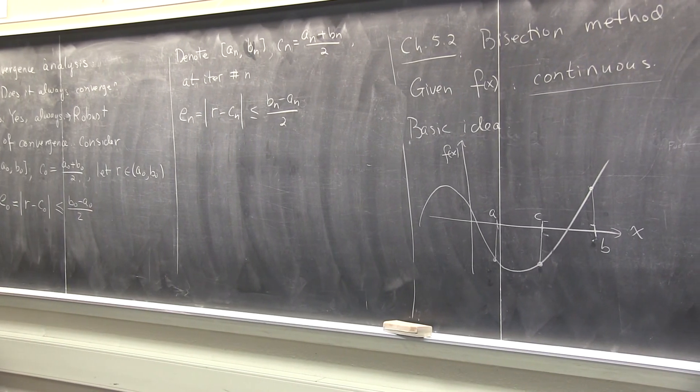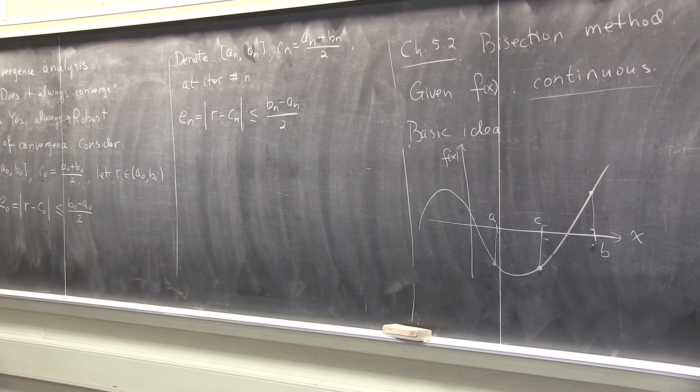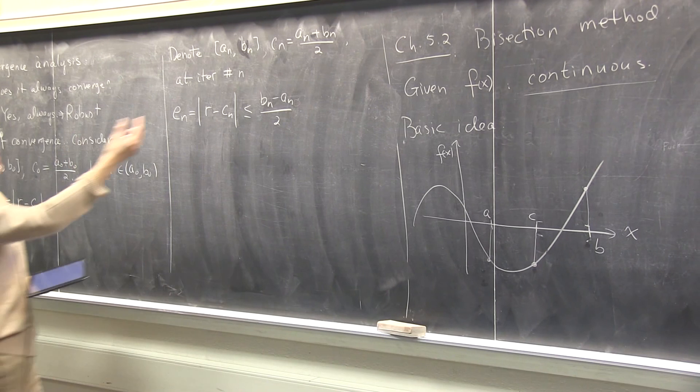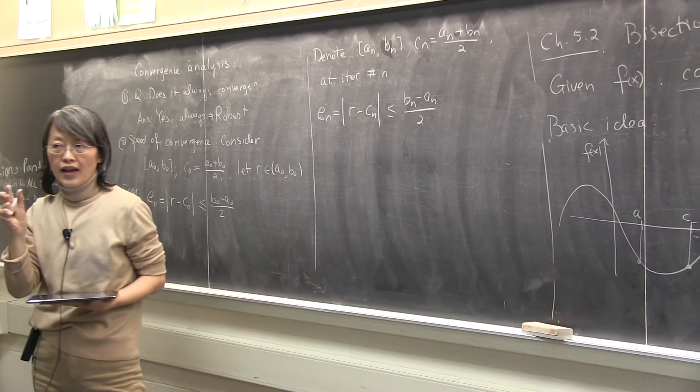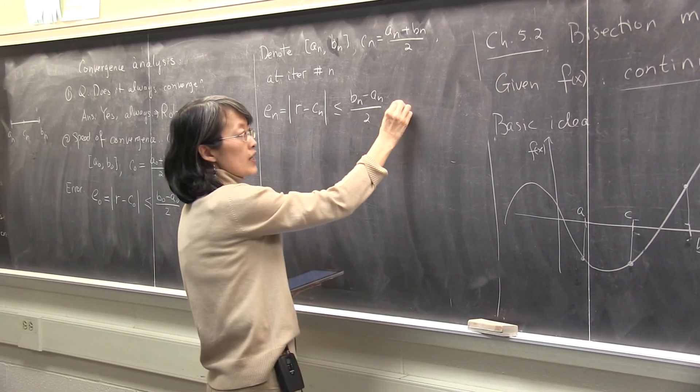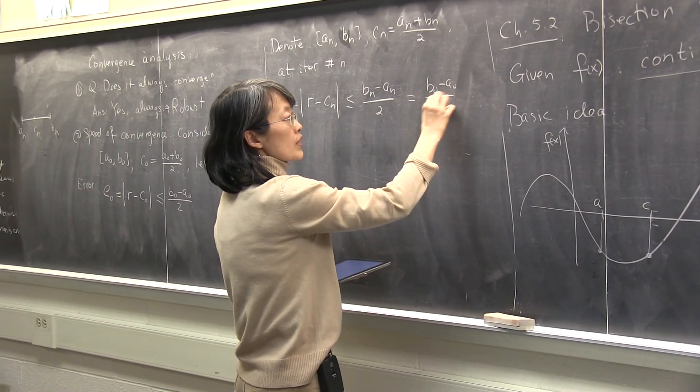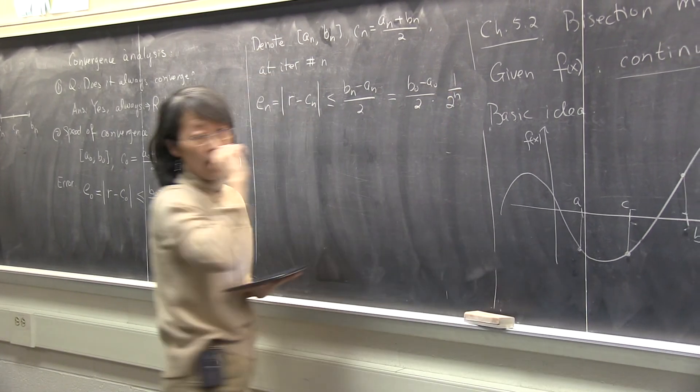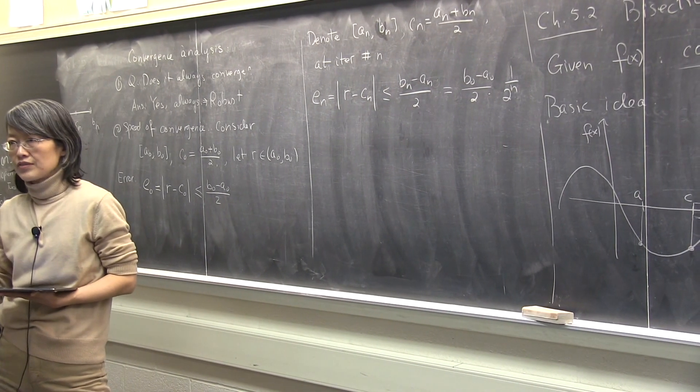So how is this error related to the first error, say? So you know in bisection method, each iteration, this b n minus a n, the length is shrinked by half. Is that right? So after n iteration, this will exactly be the initial one times 1 over 2 to the n, agree? It just steadily shrinks to half.